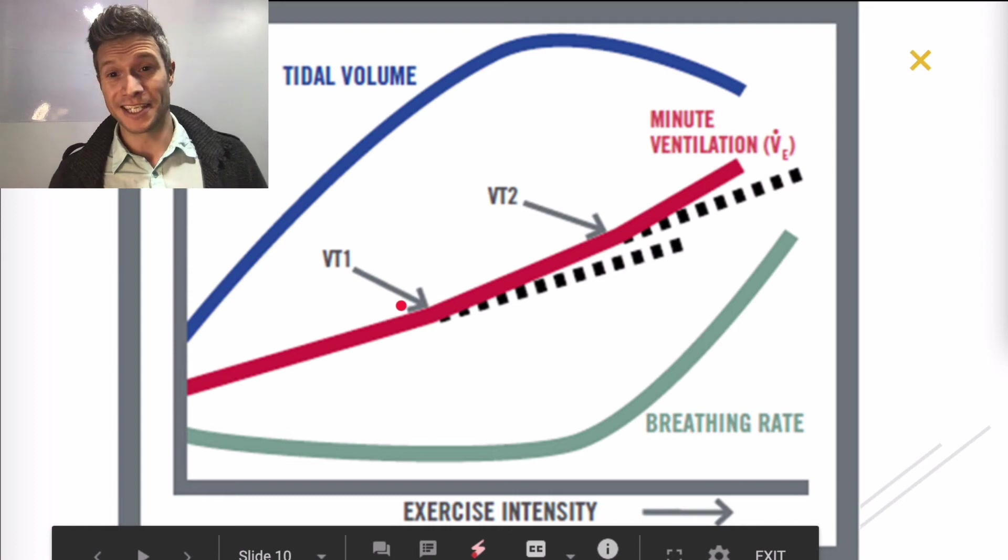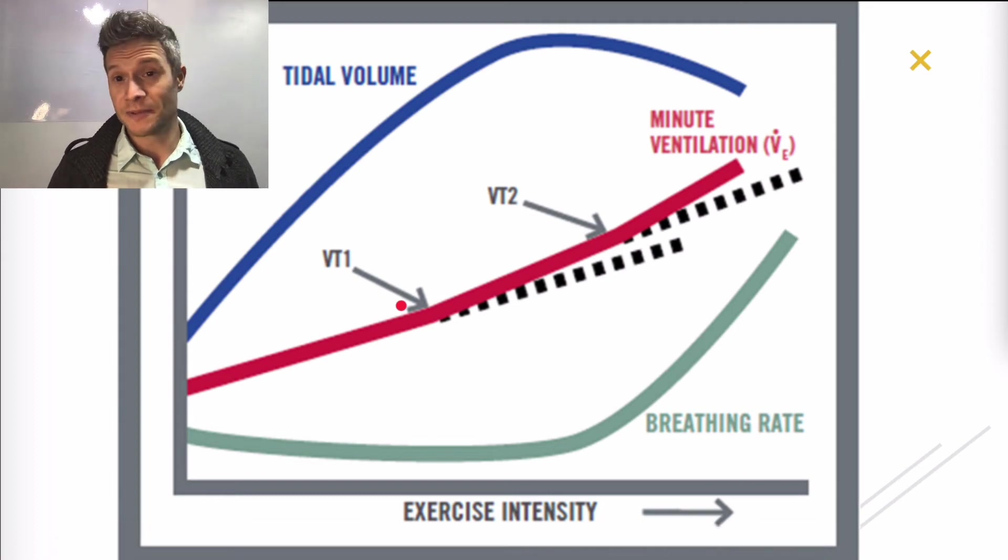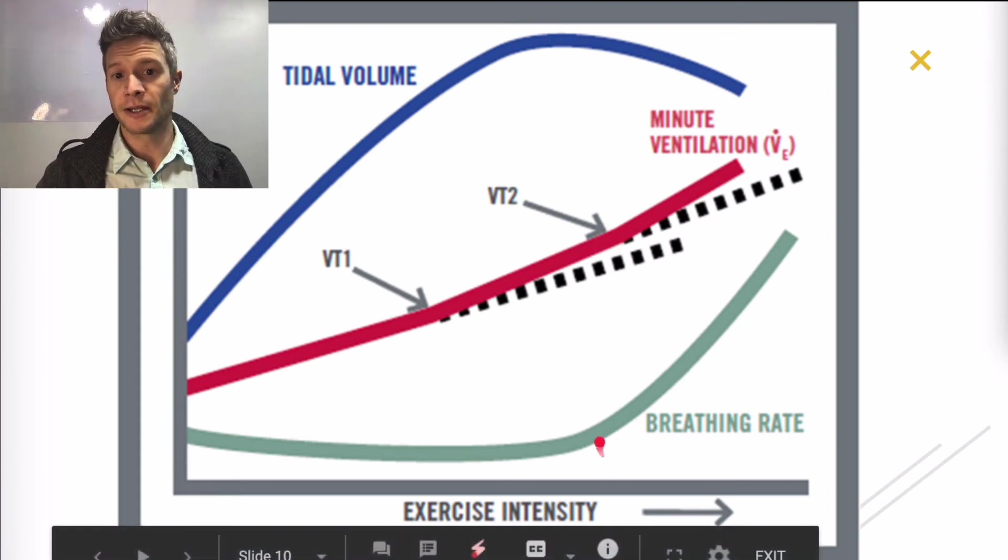So when you do this activity on your own, it happens much quicker than a lot of people anticipate. Most people, when they start thinking that they're working hard or working in an anaerobic state, think they have to get all the way up to the ventilatory threshold two. And when you get to that moment, watch the video that I uploaded regarding this test, the woman on the bike, they're working really hard. You can see she's really breathing quite heavily and at a rapid rate. And that's the difference between VT1 and VT2.